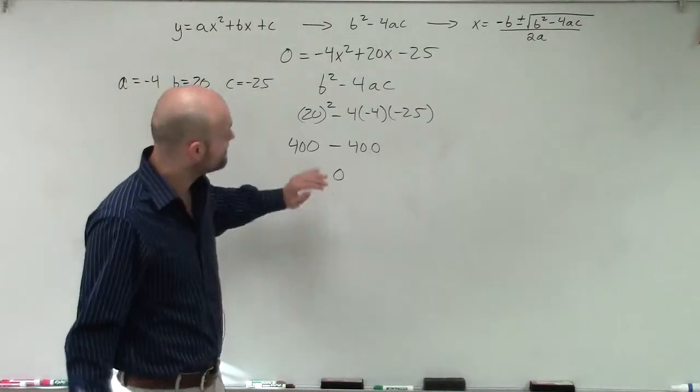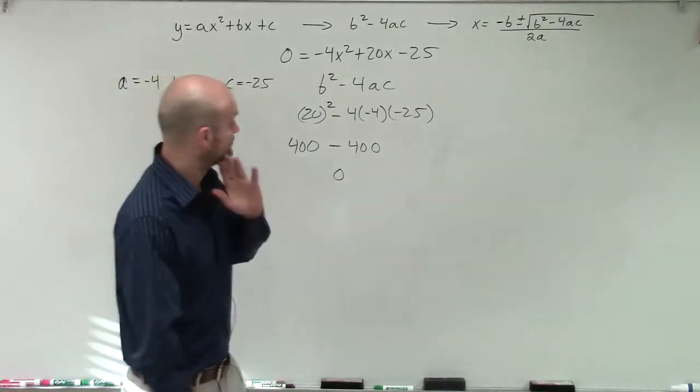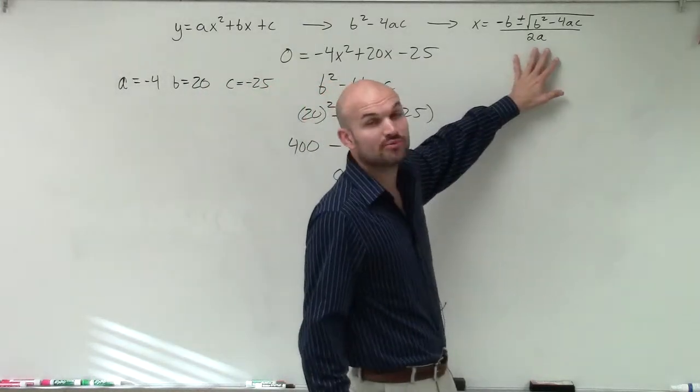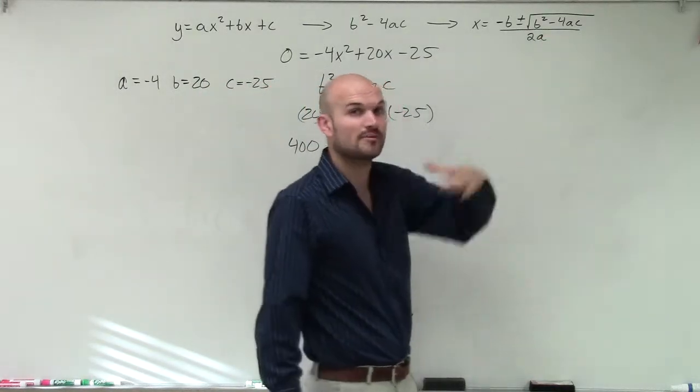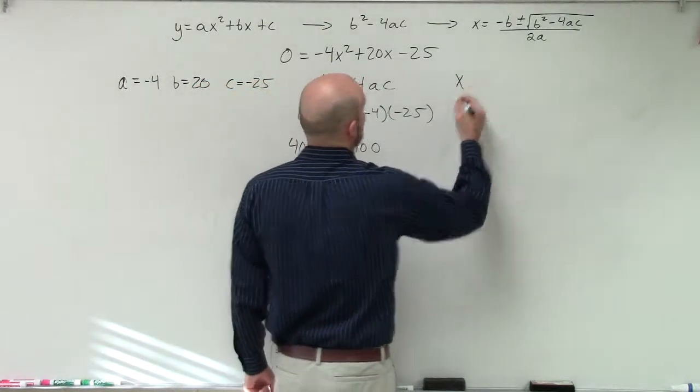Now when we have a discriminant value of 0, we're going to have one real solution, one real rational solution. So now let's go and plug in the rest of the values into the quadratic formula. And you'll see why we're going to have one real solution. So let's plug in the rest of the values.